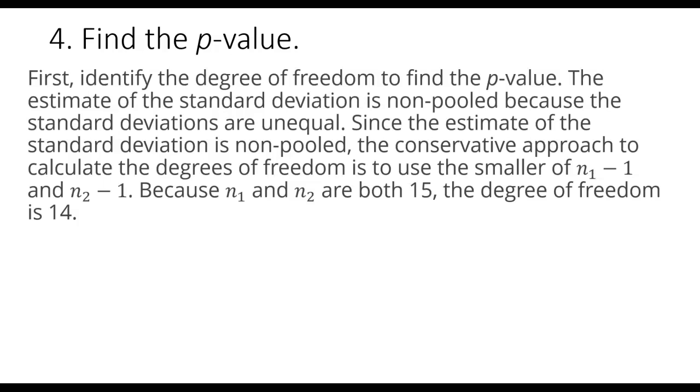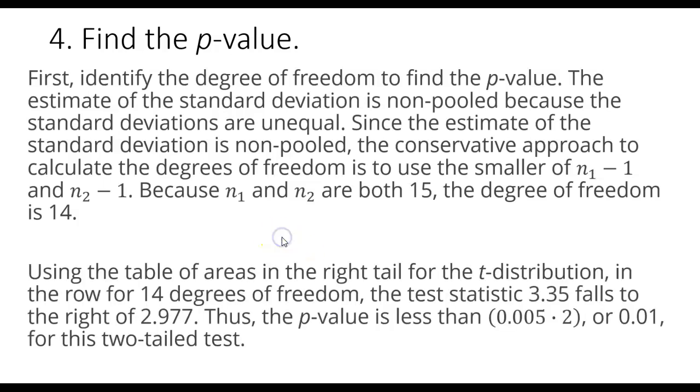So using the t-distribution table, we go down to the degree of freedom line of 14, and then we're using our test statistic of 3.35. So 3.35 is all the way to the right, it's off the table. It falls to the right of the rightmost number of 2.977. Therefore, you'll notice the p-values continue to get smaller as you move to the right in the table, and because we are to the right of the rightmost value, our p-value is going to be less than 0.01 because we are the area in two tails. The area in one tail would be 0.005, but there are two tails, and therefore the p-value is less than 0.01 for this two-tailed test.